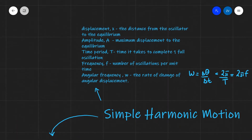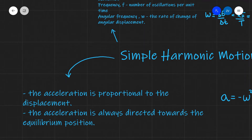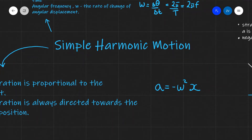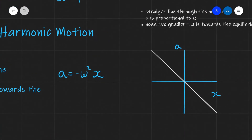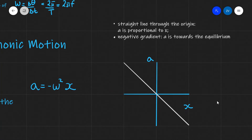What is simple harmonic motion? Remember, simple harmonic motion has two defining characteristics. Number one is that the acceleration is directly proportional to the displacement. And additionally, the acceleration is always directed towards the equilibrium position. This is summarized into the defining equation of SHM: acceleration is directly proportional to displacement x, with a constant of proportionality of negative angular frequency squared. If we plot acceleration on the y-axis against displacement x on the x-axis, we get a straight line through the origin — confirming proportionality — with a negative gradient, confirming that acceleration is towards the equilibrium position.